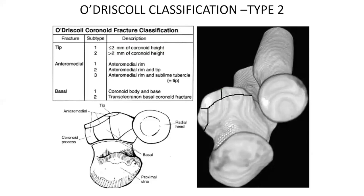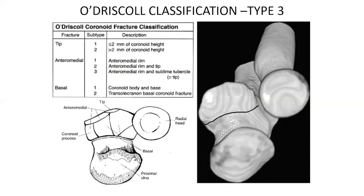In O'Driscoll type 1 fractures, these occur at the tip — subtype 1 is less than or equal to two millimeters and subtype 2 is more than two millimeters. These are typically seen in the terrible triad injury. In type 2 fractures, the anterior medial facet is involved. When the fracture involves the sublime tubercle, the varus posteromedial rotatory instability injury pattern emerges, and when it extends to the sublime tubercle, it can result in an extremely varus unstable elbow. Type 3 fractures bear the critical ligaments of stability and significantly compromise articular architecture.